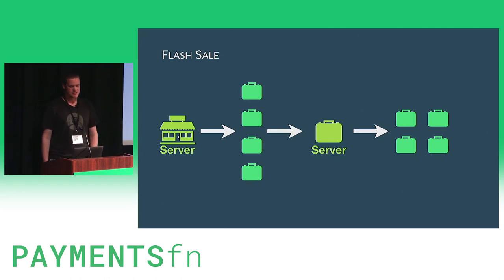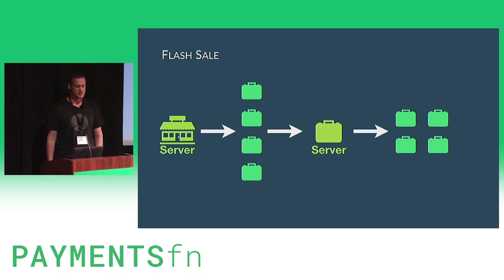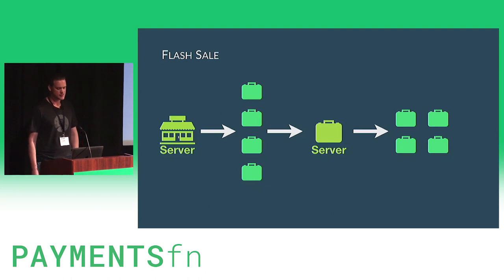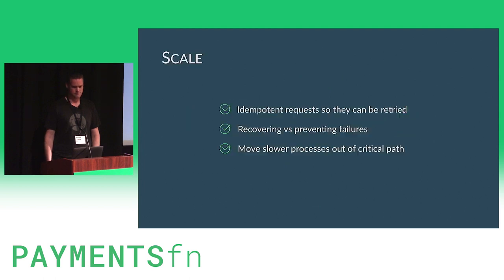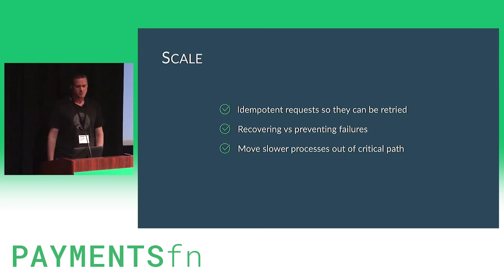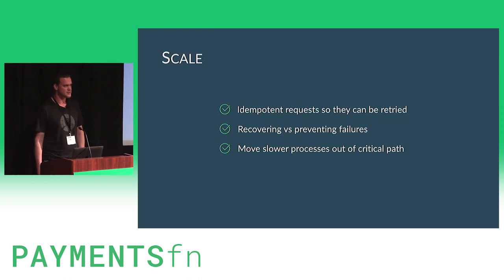An added benefit to having payment processing in a background job was that we now had more control over how they were processed without impacting the user's experience. We could throttle payment gateways so we didn't overload them, or pause processing of a particular gateway if they were down or having issues. When scaling a system, make operations idempotent as much as possible so they can be safely retried. Make sure you can recover from failures as well as prevent them — you're not going to catch everything. Moving processes out of the critical path can be a lot easier and cheaper than trying to optimize them.